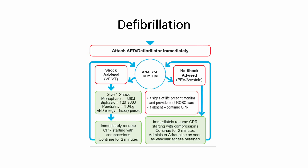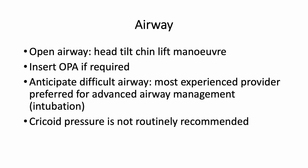Once you have analyzed the rhythm: no shock is advised in PEA and asystole; shock is advised in VF and in VT. For the airway in CABD, open the airway as discussed earlier and insert an oropharyngeal airway if required. A difficult airway should be anticipated in all obstetric patients, so the most experienced provider is preferred for any advanced airway management. Cricoid pressure is not routinely recommended.